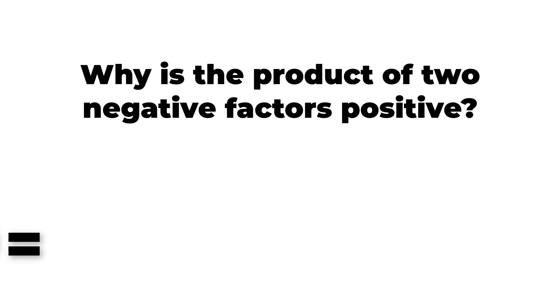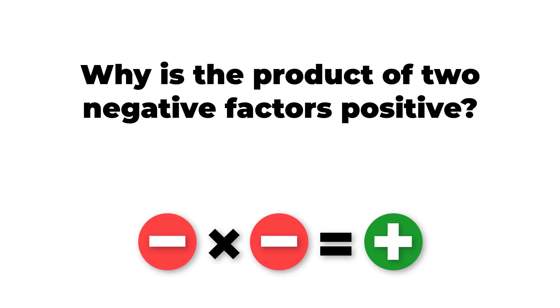To explain mathematically why two negative numbers, when multiplied, give a positive outcome, we can use basic algebraic principles and properties.